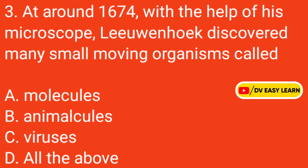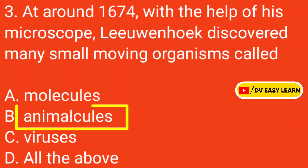Question number 3: At around 1674, with the help of his microscope, Leeuwenhoek discovered many small moving organisms called — Correct answer: Animalcules.